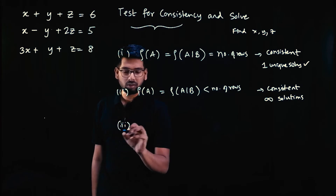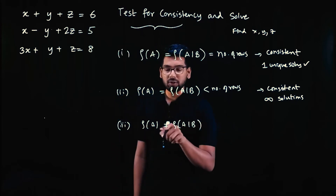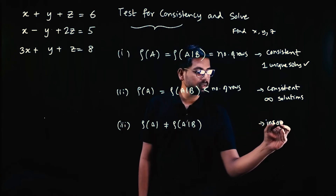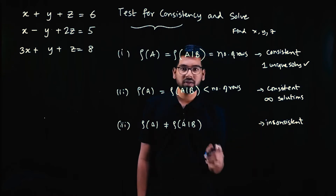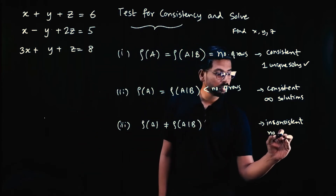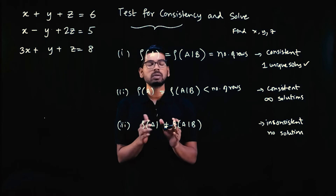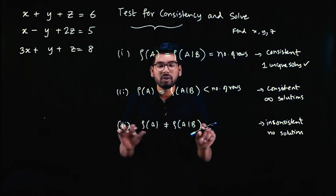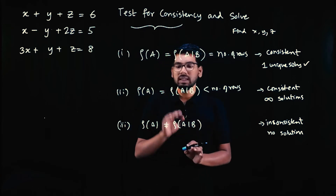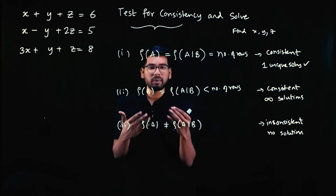Third condition: if rank of A is not equal to rank of AB, then the system is said to be inconsistent. Inconsistent means there is no solution for the system of equations. So these are the three conditions — very simple conditions you need to remember or understand.